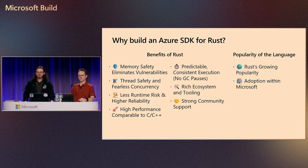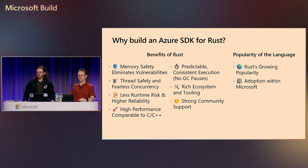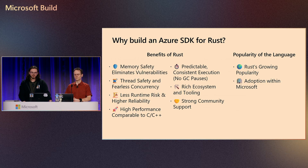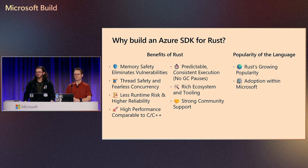I wanted to briefly explain why we decided to bring Rust into the official Azure SDK fold. Rust's ownership and borrowing system helps prevent common bugs like buffer overflows and use-after-free errors, by forcing developers to handle those at compile time rather than waiting to find them during runtime or in production. Rust also offers performance on par with C and C++, compiling down to efficient machine code with minimal runtime overhead.